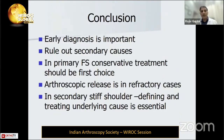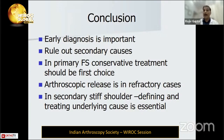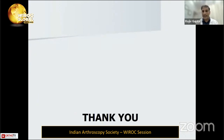In conclusion, early diagnosis is important for timely intervention. Secondary causes — arthritis, trauma to cartilage, loose bodies, calcific tendinitis — must be ruled out with proper investigations. For primary frozen shoulder, conservative treatment should be the first choice; if it doesn't improve, arthroscopic release is the ideal option today. For secondary stiff shoulder, identifying and treating the underlying cause is essential.